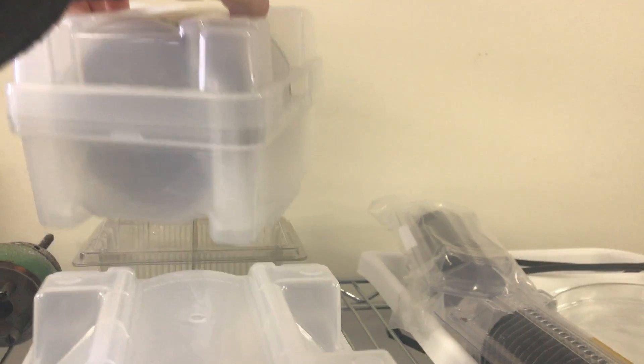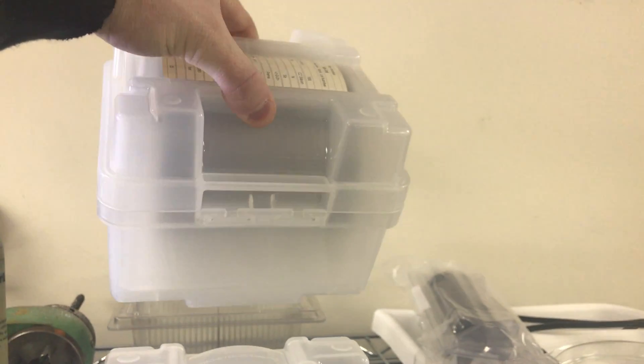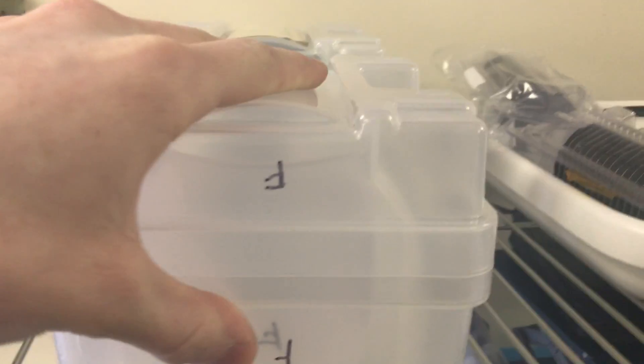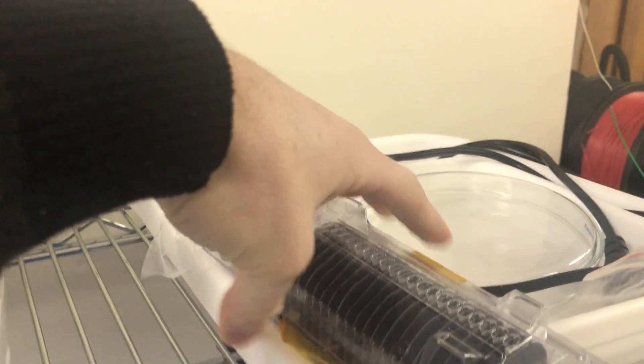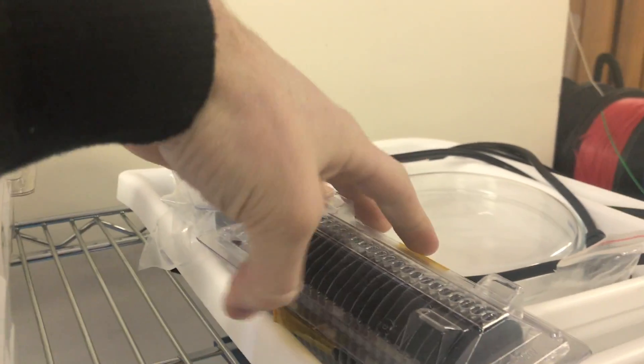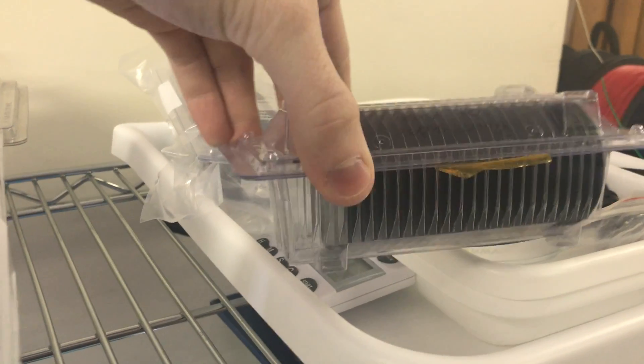And up here I have my wafers. So I think this is 25 4-inch N-type wafers. This is an empty carrier. And then these are 25 each. So there's 50 P-type 2-inch wafers here. I've used a few of them.